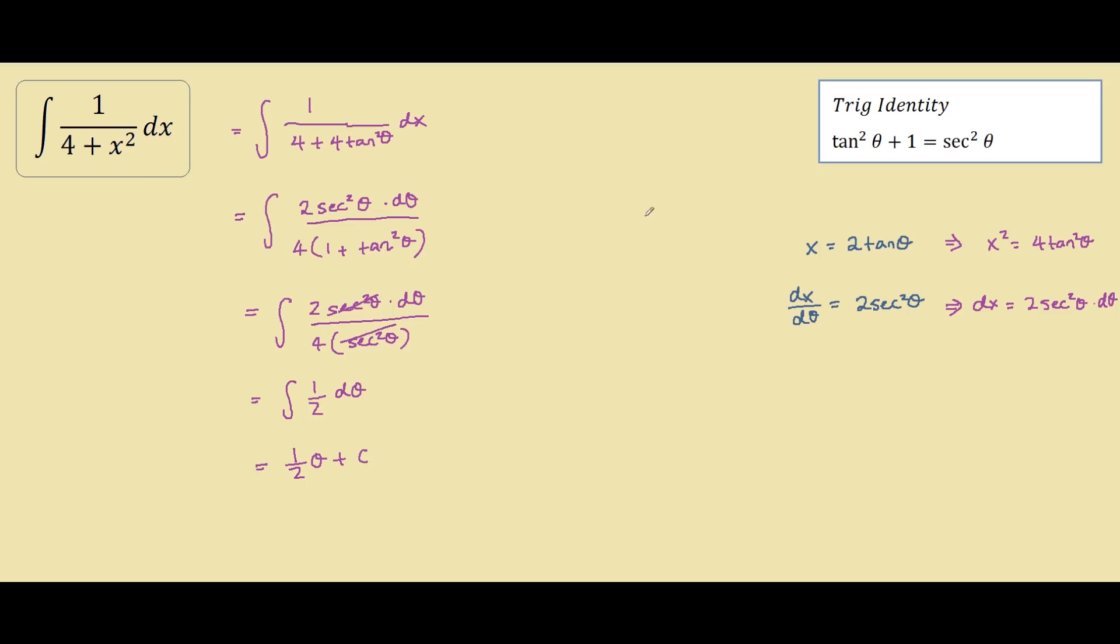To return to the x world, we would have to find theta in terms of x. So from this equation, we know that tan theta equals x over 2, so theta equals the inverse tan of x over 2.